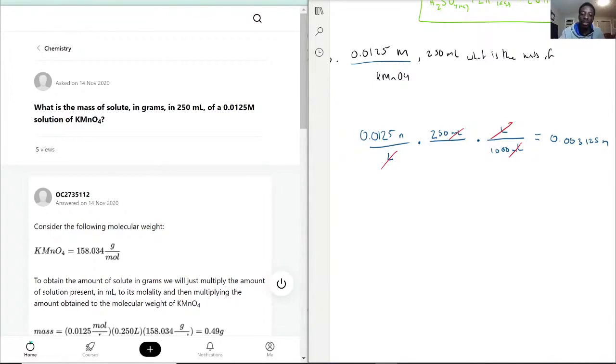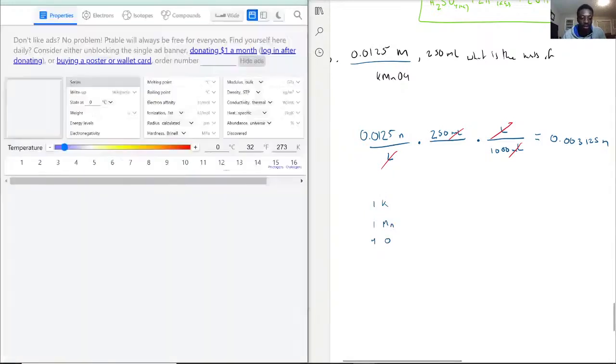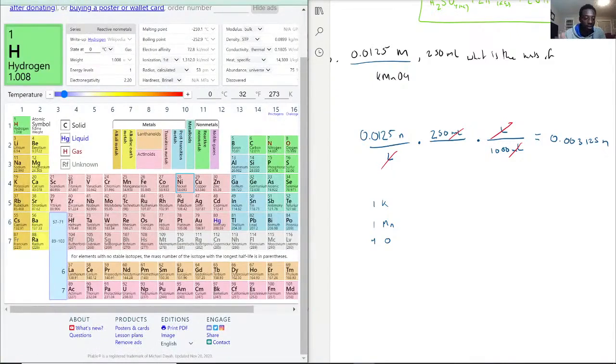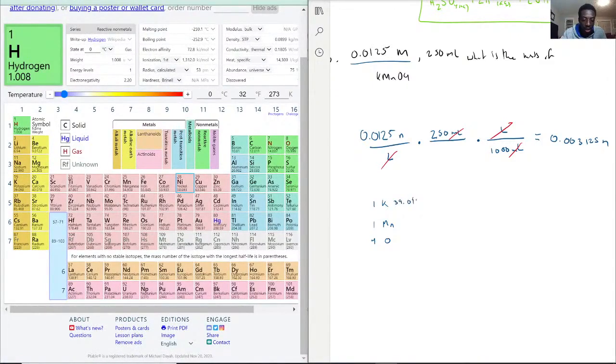Now to find out how much of that is in grams we need to know our molar mass. So we first need to get the constituents. We have one potassium, one manganese, and four oxygen. And so with that being said, look at the periodic table. We have potassium is 39.098, manganese is 54.938.